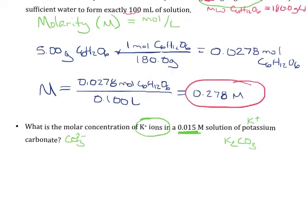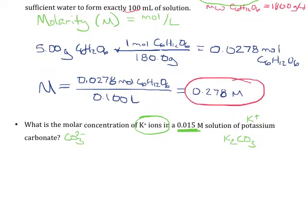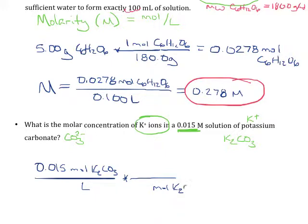You can probably do this in your head, but let me show you what it looks like mathematically. If I know that the solution is 0.015 moles of K2CO3 per liter, all I've done there is take that capital M molarity and break it up into its parts. Remember, molarity is moles per liter, so all that is telling me is that I've got 0.015 moles of potassium carbonate in every liter.